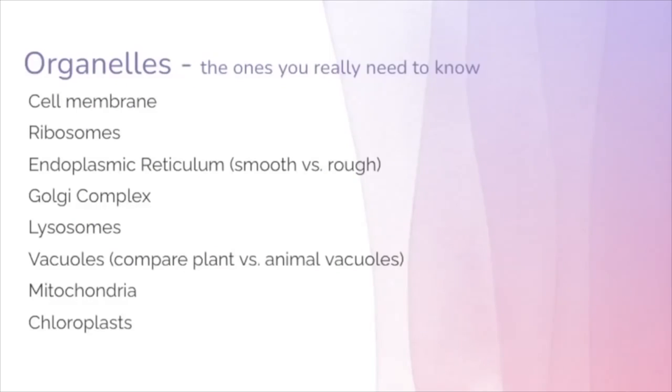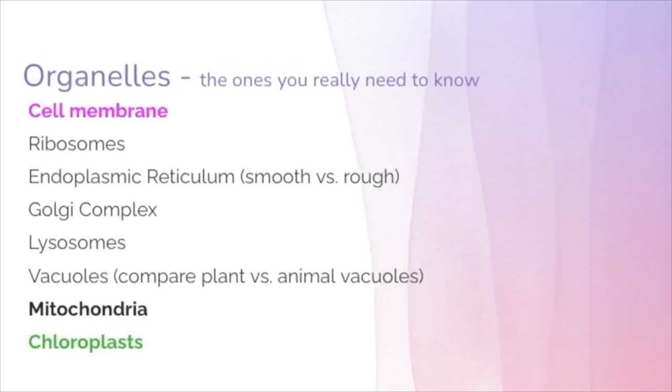These are the organelles that you really should be able to know, recognize, and understand how their functions work for AP biology. There's a lot of other organelles out there, but these are the ones that might show up on the exam. Out of this list, the most important ones you really need to know and recognize are cell membranes, mitochondria, and chloroplasts. Cell membranes are very complex. They go beyond just a phospholipid bilayer. They have integral proteins embedded in the membrane for transport, cell surface reception, cell identification, and other activities. They also have carbohydrates and cholesterols in the membrane.